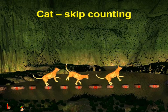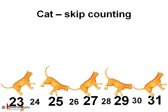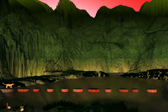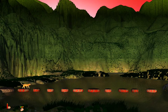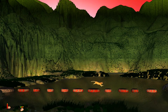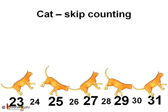So, this was skip counting — skipping the numbers in between. Now, if the river was longer and the cat continued to skip, let us see how cat would cross if it started from the number 23. It will use 23, then 25, then 27, 29, and 31. It didn't use the in-between numbers: 24, 26, 28, and 30. So cat was still doing skip counting. It doesn't matter from where you start, but you need to skip the number in between.